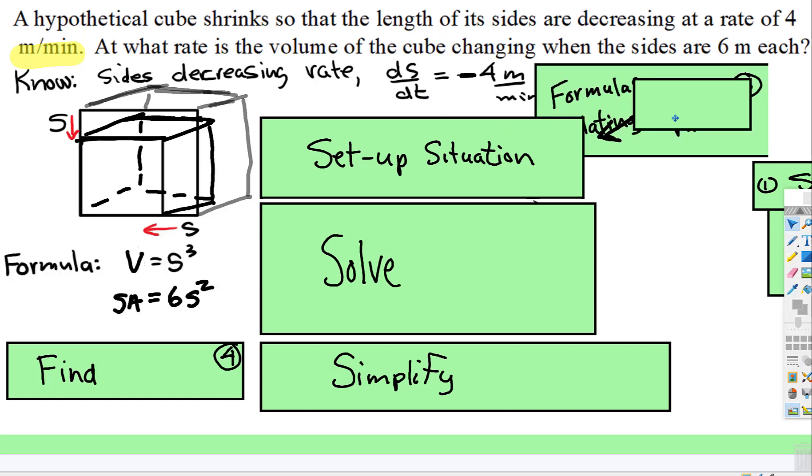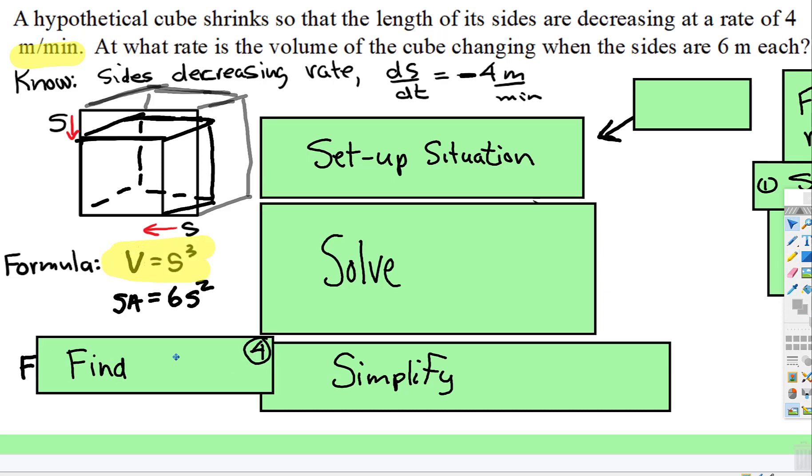All right, the formulas. But because we only have a side involved, because it's a cube, the volume formula is the only one we'll need. So cubes and squares typically are the only time you only need one of the formulas. When it's beyond a cube or a square, most of the time you'll need two formulas. And then we need to find the rate that the volume is changing at the exact moment when the side length is six meters.